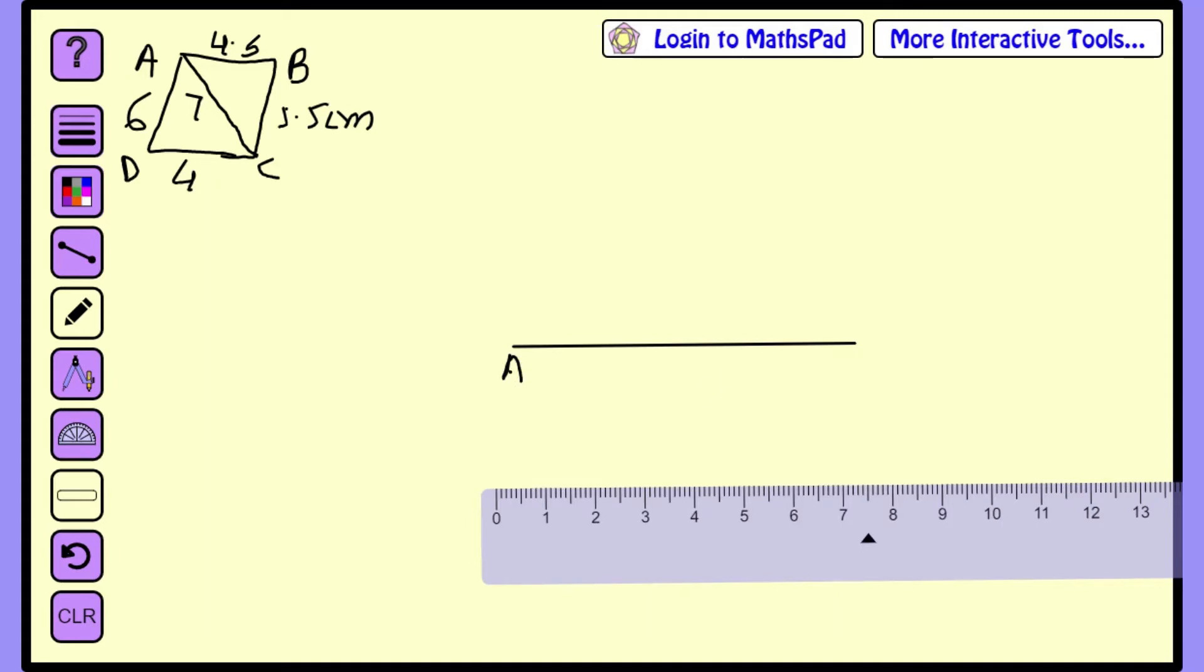I have written the measurements ABCD with AC diagonal 7 cm and all other measurements. Now I am taking base AC 7 cm. Why am I taking diagonal as a base? Because it becomes easy - diagonal divides the quadrilateral into two triangles. But you can take base as anything. If you are taking diagonally, it becomes a little easier. We will draw a line segment AC 7 cm.